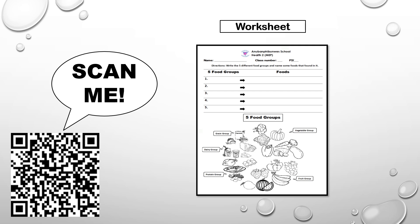You need to download the worksheet by scanning the QR code. All you have to do is write the five different food groups. For example, write the vegetable group in number one, then under the foods, write examples of food in the vegetable group — for example, pepper. Write the word in the food group. Thank you for listening. This is Teacher Michelle.